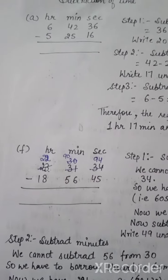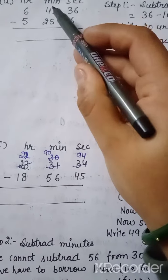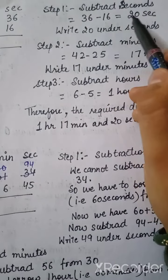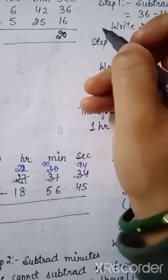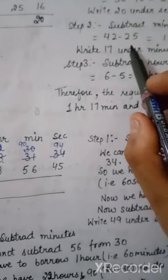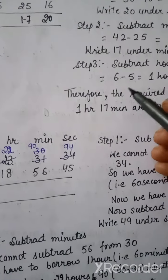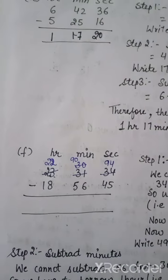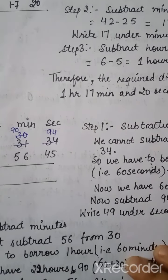Now we'll talk about subtraction of time — how to subtract time. The first step is to subtract the seconds column, then the minutes column, then the hours column. 36 minus 16 gives 20 seconds. Step 2: subtract minutes — 42 minus 25 gives 17 minutes. Last step: subtract hours — 6 minus 5 is 1. So the answer is 1 hour, 17 minutes, and 20 seconds.